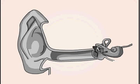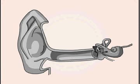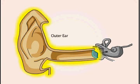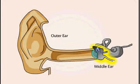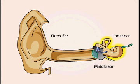The ear is responsible for translating variations in air pressure, whether from speech, music, or other sources, into the neural activity necessary for our perception and interpretation of sound. The ear can be divided mainly into three principal sections: the outer ear, the middle ear, and the inner ear. Each of these parts performs a specific function in processing sound information.